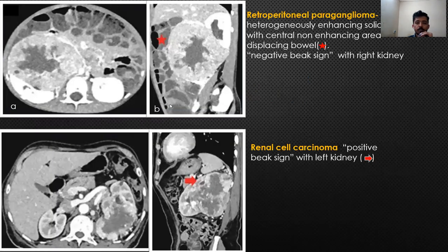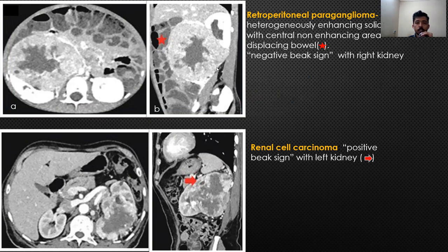Let's briefly talk about a few of the imaging features of retroperitoneal tumours. The first case showed large heterogeneous lesions with non-enhancing areas noted in the retroperitoneum, with a negative beak sign with the kidney, suggestive that it is not of renal origin.